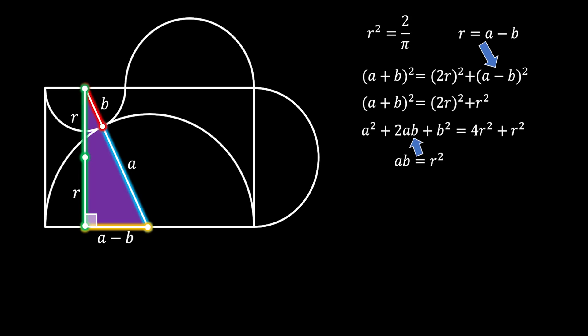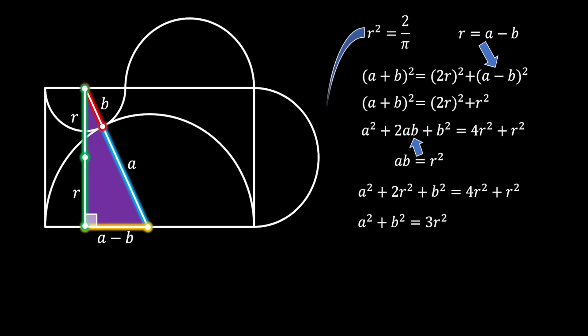If we do this, we will get a completely new equation. If we put all the terms with r squared on the right side and calculate, we will get that A squared plus B squared is equal to 3r squared. Furthermore, we can substitute the value of r squared with 2 over π — the first value we got — and if we insert this value, we will find that A squared plus B squared must equal 6 over π.